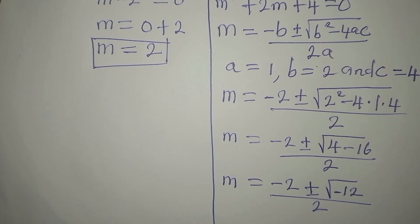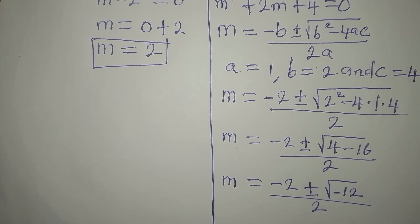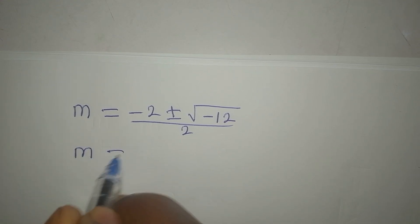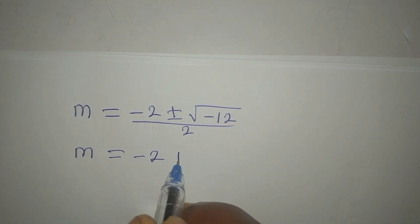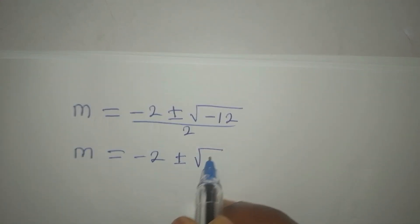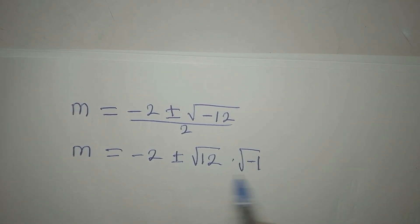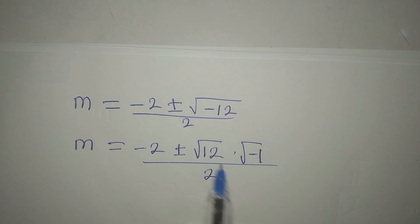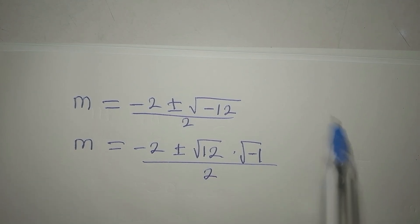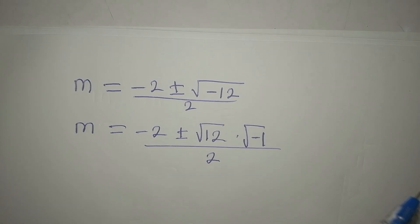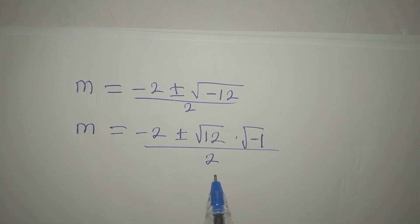So we'll proceed from here. So that m will now be minus 2, plus or minus, square root of 12 times square root of negative 1, divided by 2. Square root of 12 times square root of negative 1 will give us square root of negative 12.